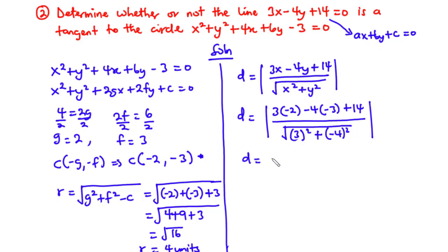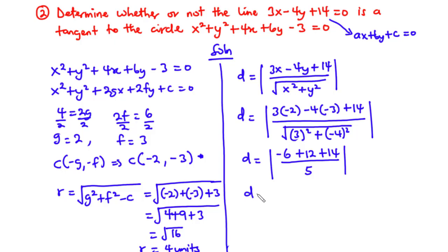Substituting: numerator = |3(−2) − 4(−3) + 14| = |−6 + 12 + 14| = |20| = 20. Denominator = √(3² + (−4)²) = √(9 + 16) = √25 = 5. Therefore D = 20 / 5 = 4 units.